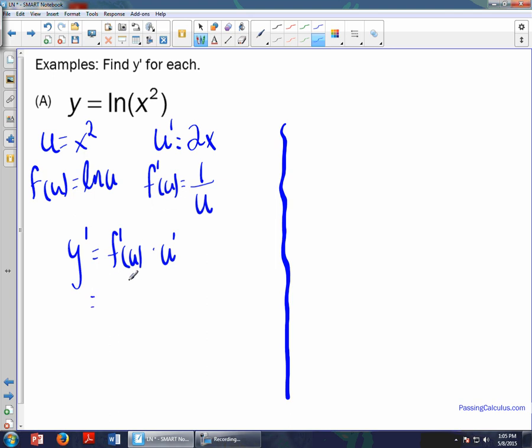So when I write out my chain rule, which is y prime equals f prime of u times u prime, well the derivative of f prime of u is 1 over u, which is, or u is x squared, so I can put my x squared here times the derivative of u which is 2x. And that equals y prime is 2x over x squared. So then I can cancel, which leaves me with 2 over x as my final answer.